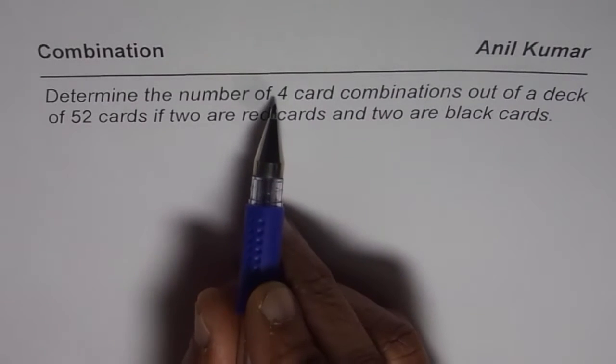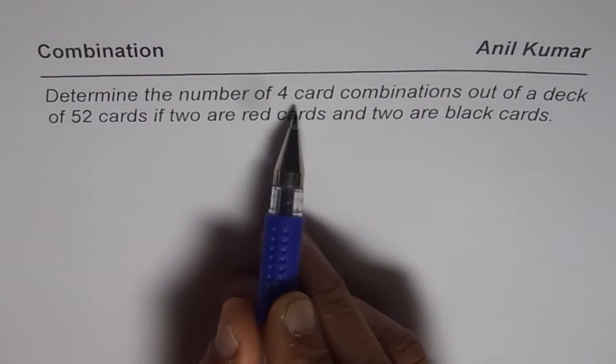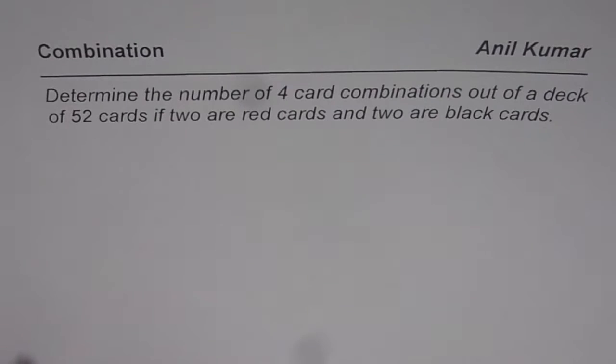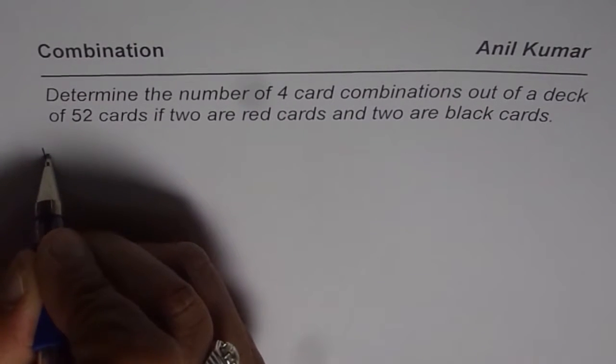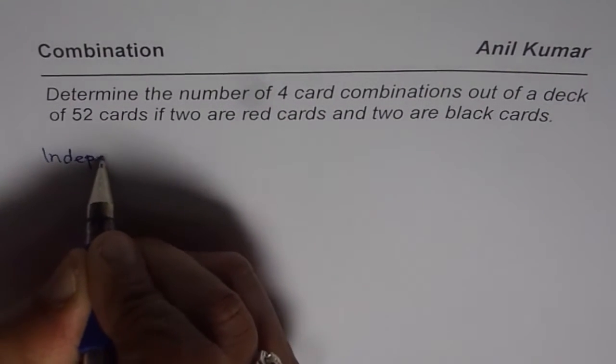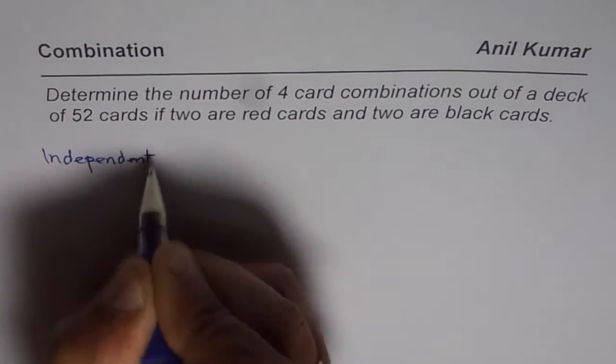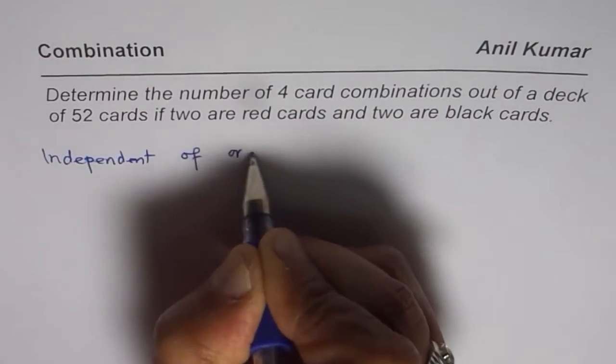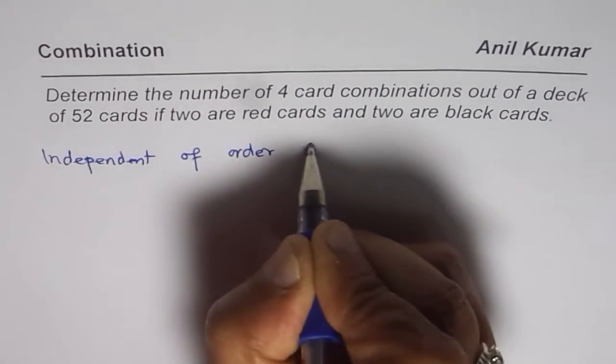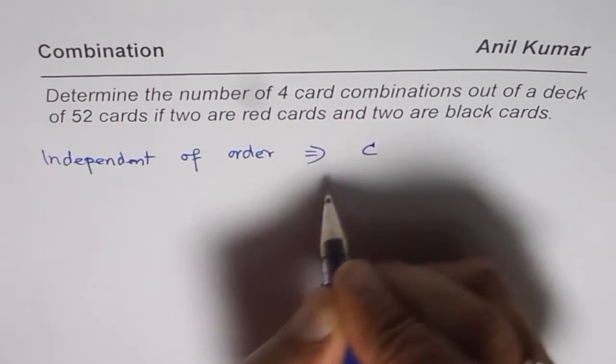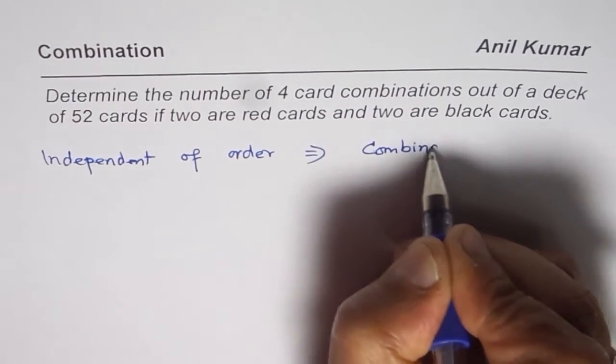Now, if you have 4 cards in your hand, then the order is immaterial. So it is independent of order. And that really means what? That means it is a case of combination, not permutation.